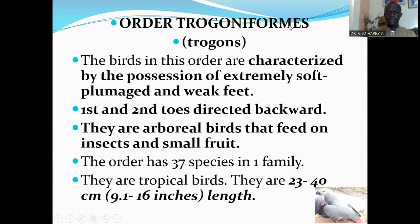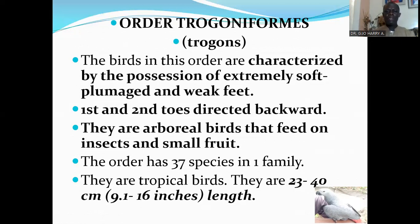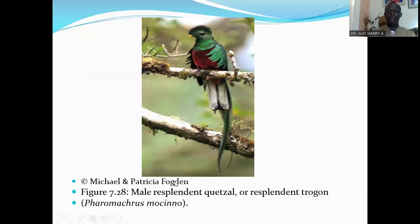The next order is Order Trogoniformes, made up of the trogons. Birds in this order are characterized by extremely soft plumage and weak feet, with the first and second toes directed backwards. They are arboreal birds that feed on insects and small fruit. The order has 79 species in one family. They are tropical birds, 23 to 40 centimeters in length. Here is the male resplendent quetzal, a resplendent trogon.